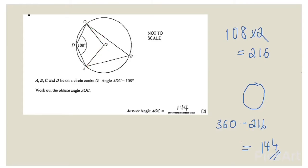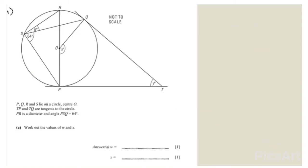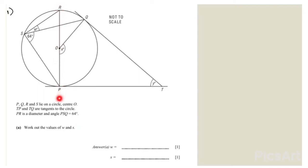This is the second question. P, Q, R and S lie on a circle with center O. TP and TQ are tangents to the circle — this is tangent TP and this is tangent TQ. PR is a diameter, and the angle PSQ is equal to 64 degrees. As you can see, PR is a diameter here, and angle PSQ — this part — is 64 degrees.